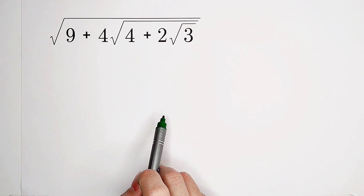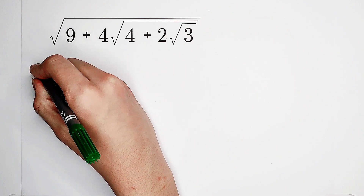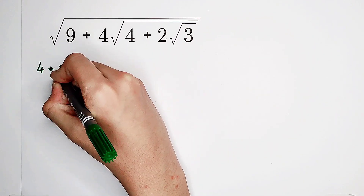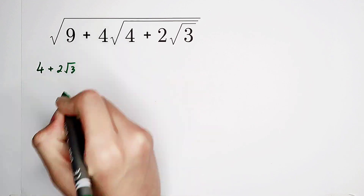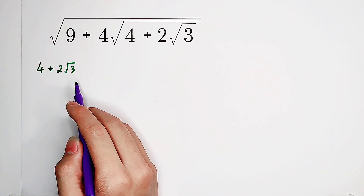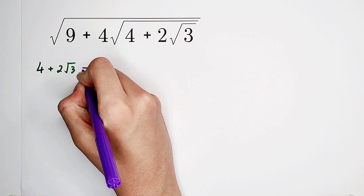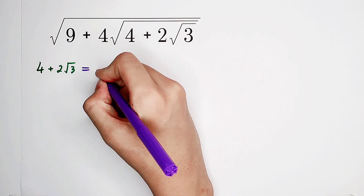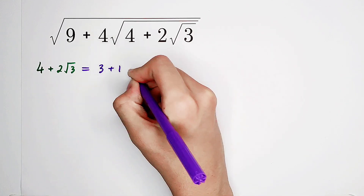Firstly, let's have a look at 4 plus 2 times square root of 3. This one is interesting. Hopefully, it can be written as a perfect square. 4 can be written as 3 plus 1.